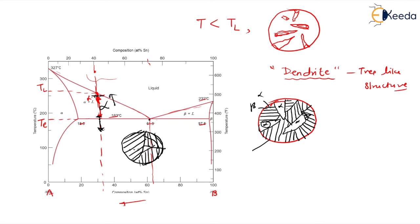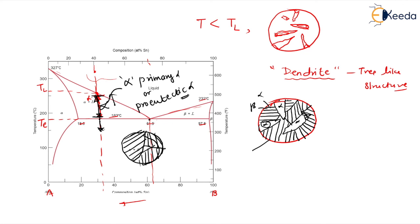The alpha which has been nucleated and grown in the dendritic fashion, from the liquidus down to the eutectic temperature — this is our alpha grown before the eutectic alpha. That is the reason why this alpha is known as the primary alpha, or also called the pro-eutectic alpha. The alpha present in the lamellar form with beta below T is known as the eutectic alpha.